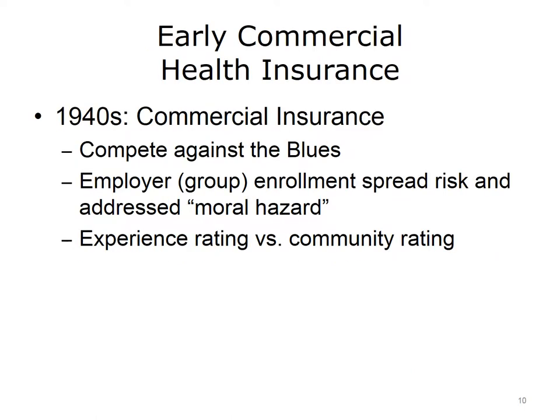During the 1940s, commercial insurance carriers noted the growth of these hospital and physician Blue plan associations and began to offer group health insurance. Conditions that supported the movement into this arena included providing insurance for large groups of employees, which spread the risk and helped address some of the moral hazard associated with health insurance. In addition, commercial carriers could adjust their rates based upon the age of the group members and their payment experience, whereas the hospital association plans offered community rating — the same price for any insured person.